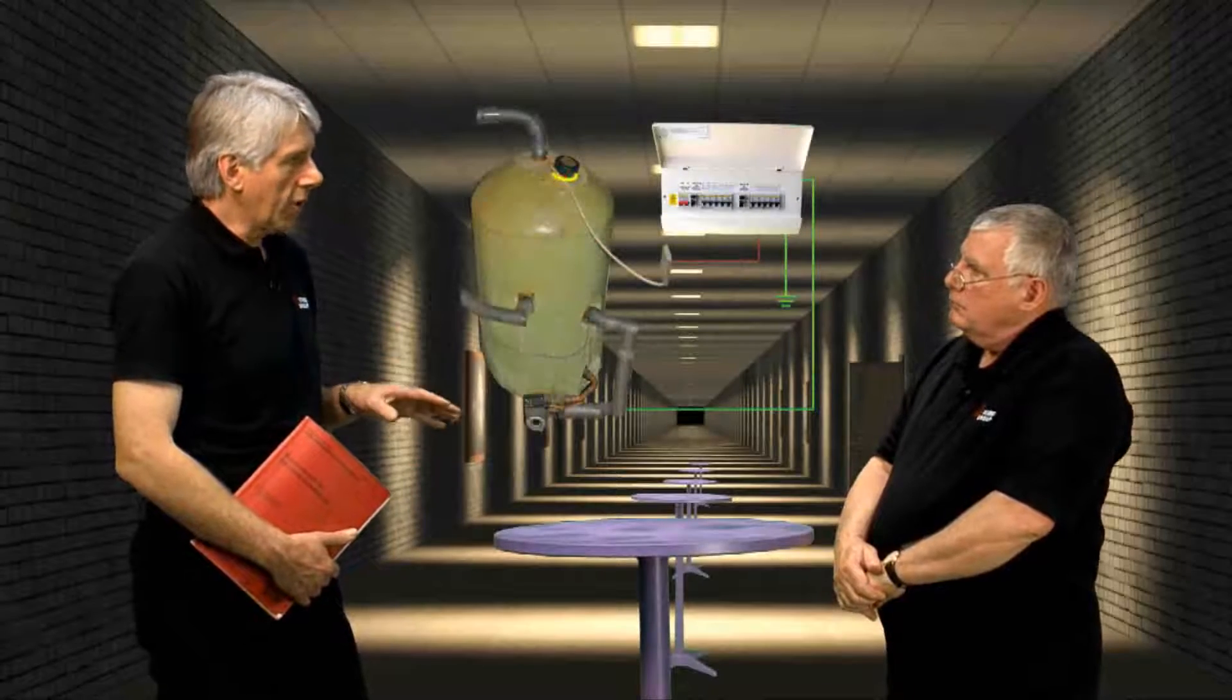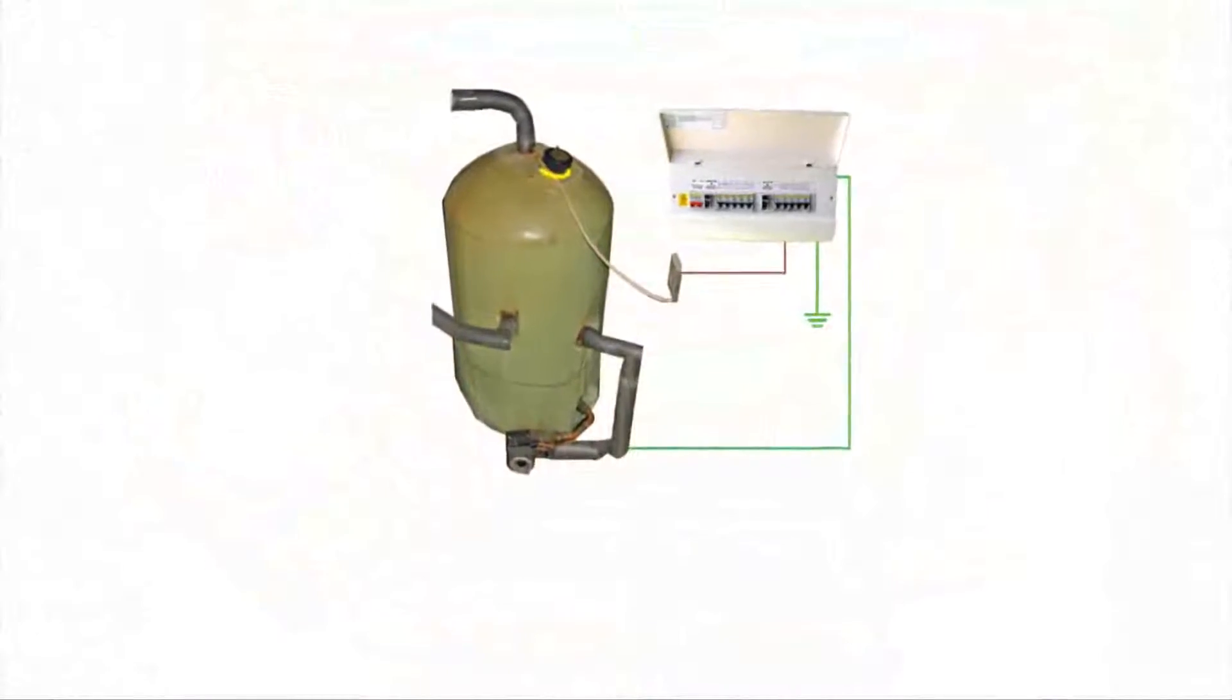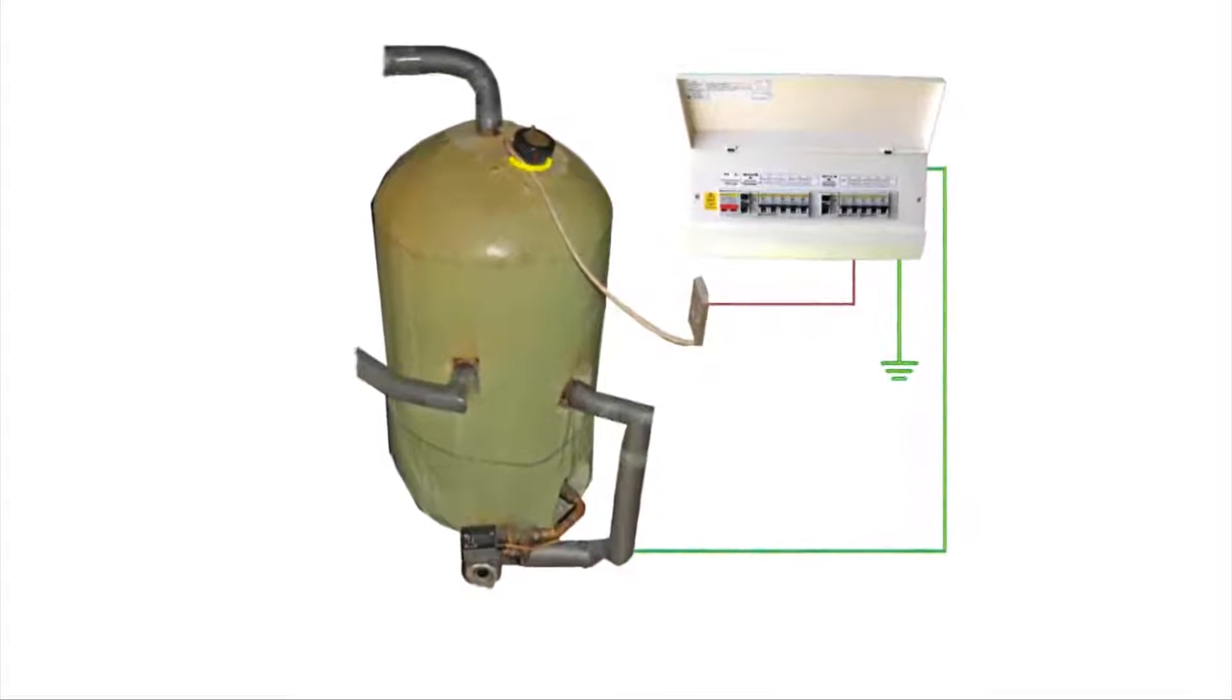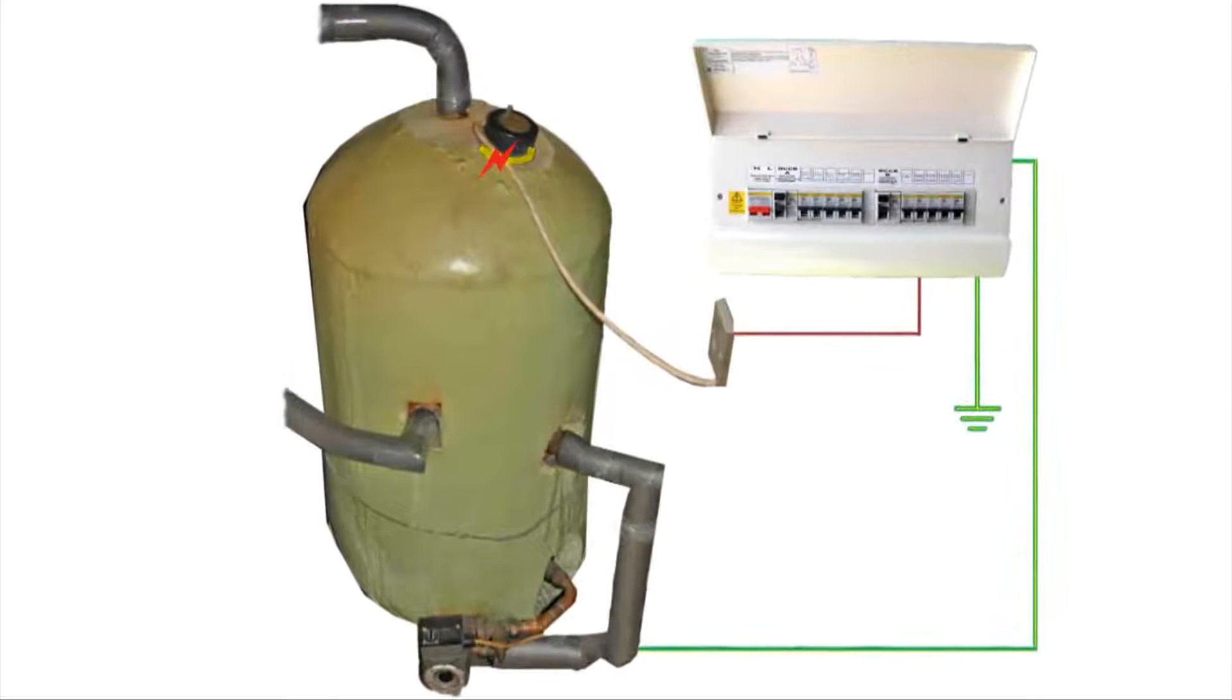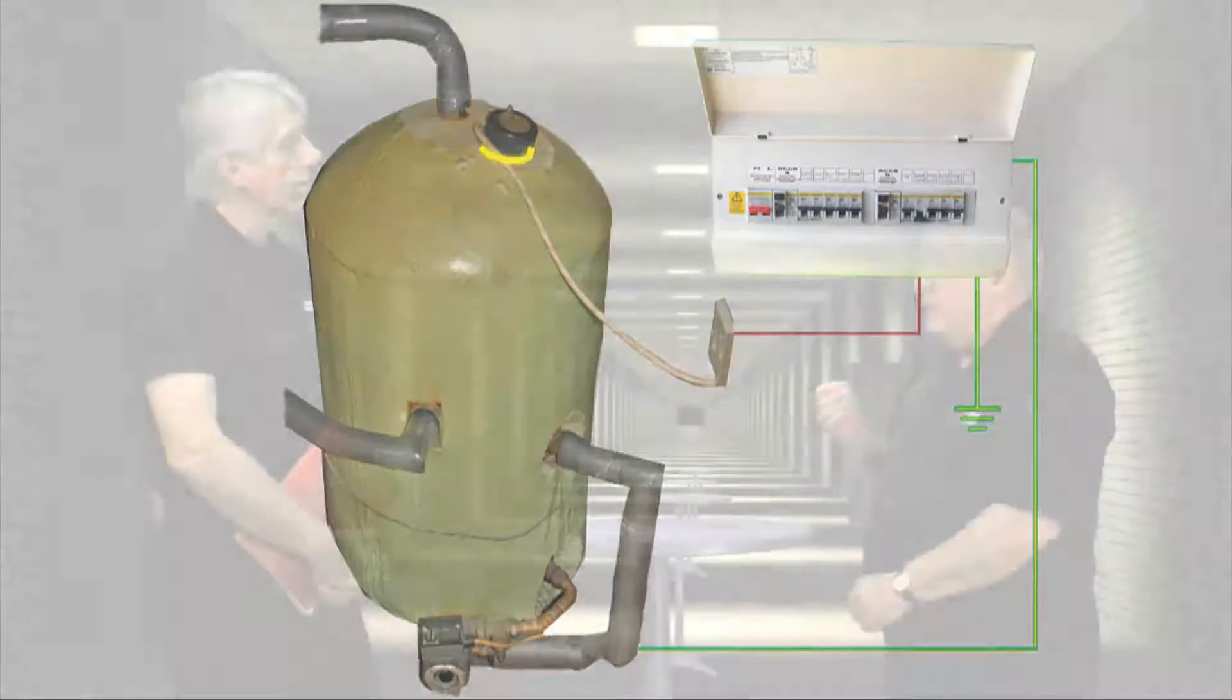Let's imagine the flex on an immersion heater is worn through and the line conductor touches the casing. What actually happens? With effective ADS in place, an earth fault current will flow very quickly to earth, causing the fuse or the circuit breaker to disconnect the circuit within 0.4 seconds. So even if you went to touch it, it will be dead before you did.